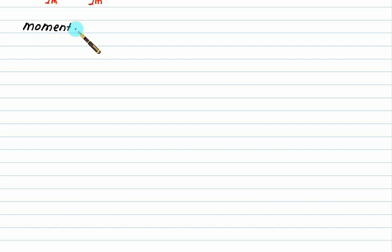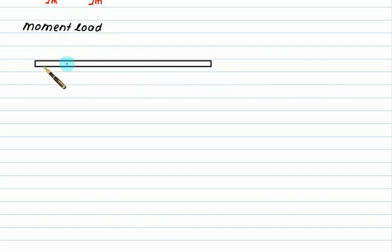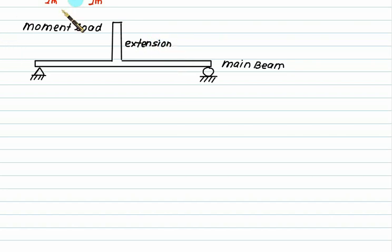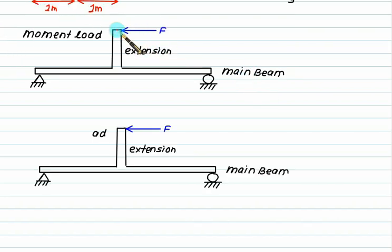We have one more type of load called a moment load. Consider a beam with two standard supports — one hinge and one roller. An extension is added to this main beam, and an external load acts on that extended portion, either horizontal or vertical. In this case you have to shift the load to the common point between the main beam and the extension, following the standard rules.